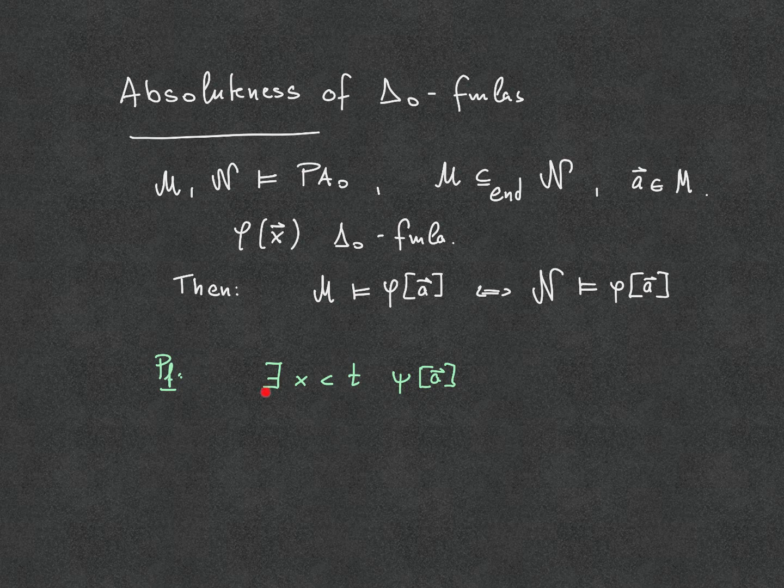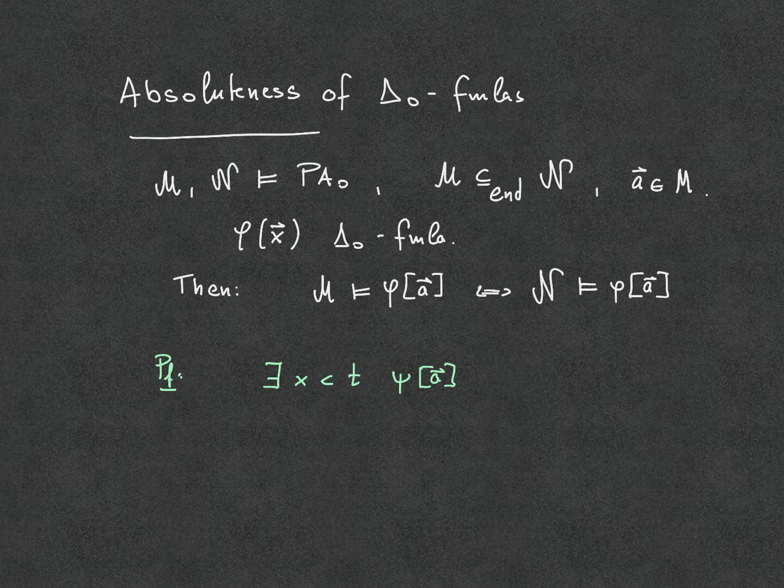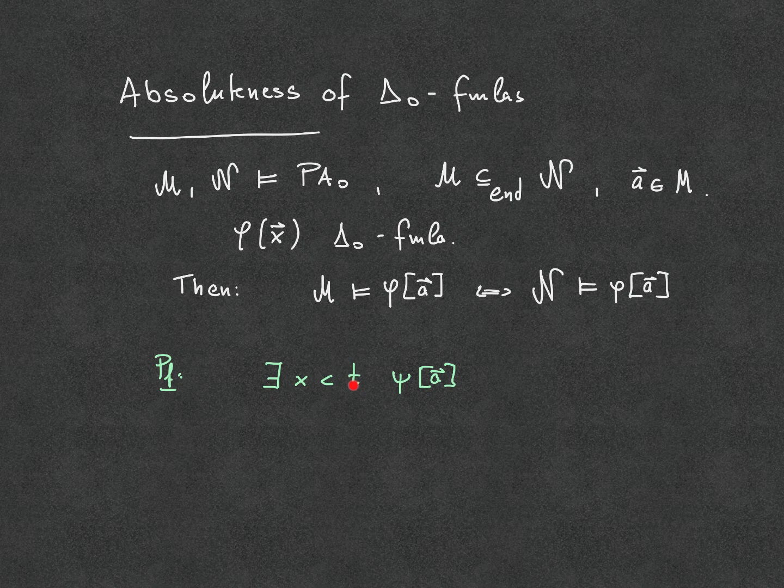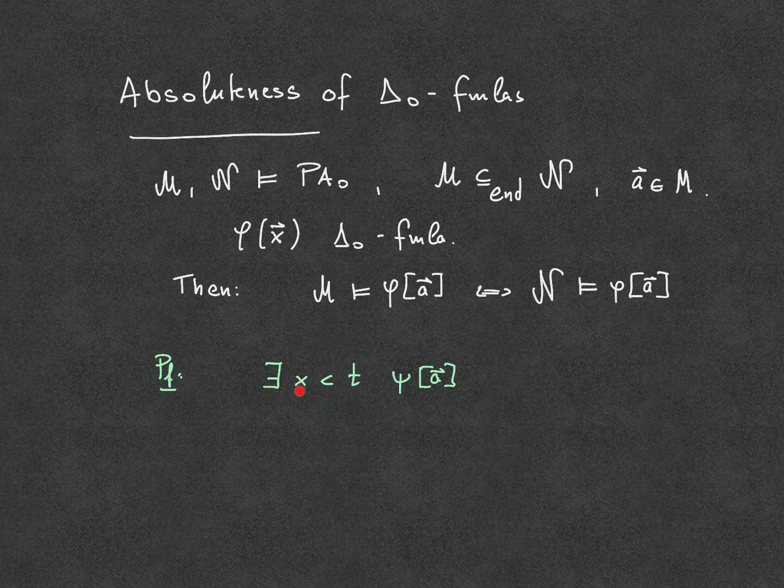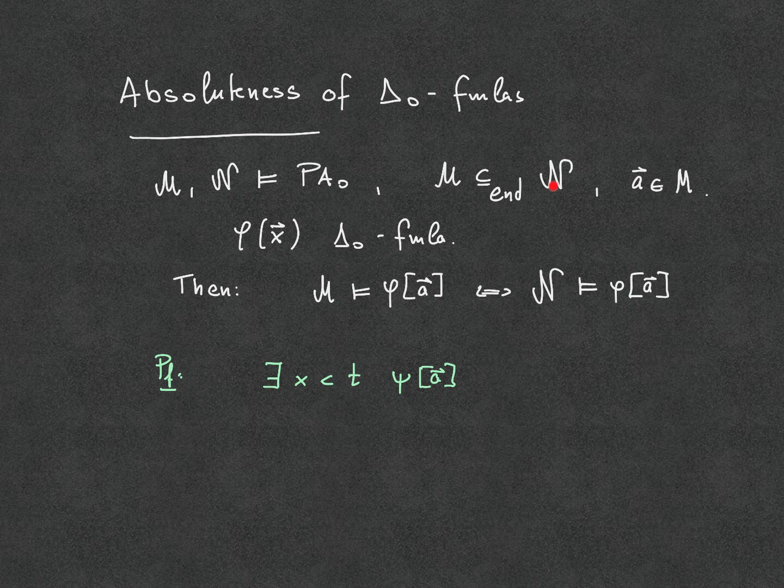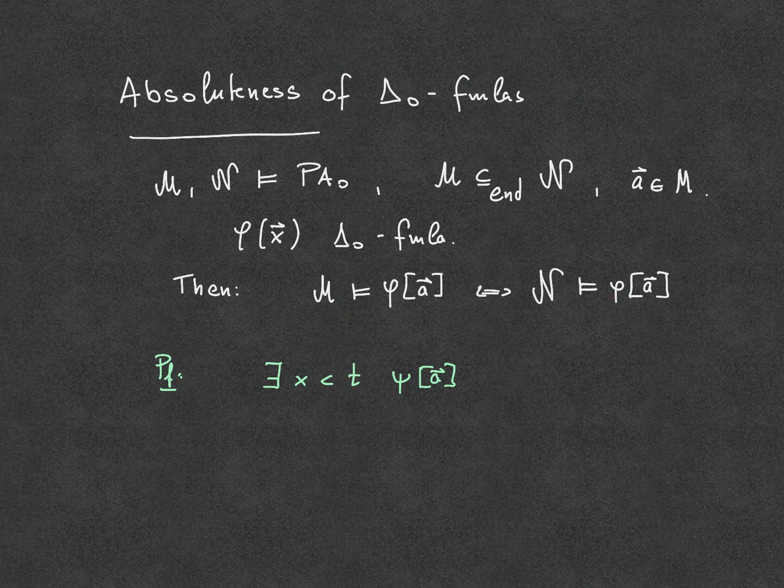The key ingredient is of course the observation that if you have a formula of this form, and this one doesn't have any quantifiers in it, if all the variables are now evaluated in the smaller structure, in particular it means that this term here has to be evaluated into an element in the smaller structure m. That means the variable here, x, is bounded by an element in the smaller structure. And since n is an end extension of m, that means there will be no elements from the bigger structure that are inserted below the evaluation of t here in n. So that means that this equivalence holds, so there cannot be new witnesses to a statement like this in the bigger structure.